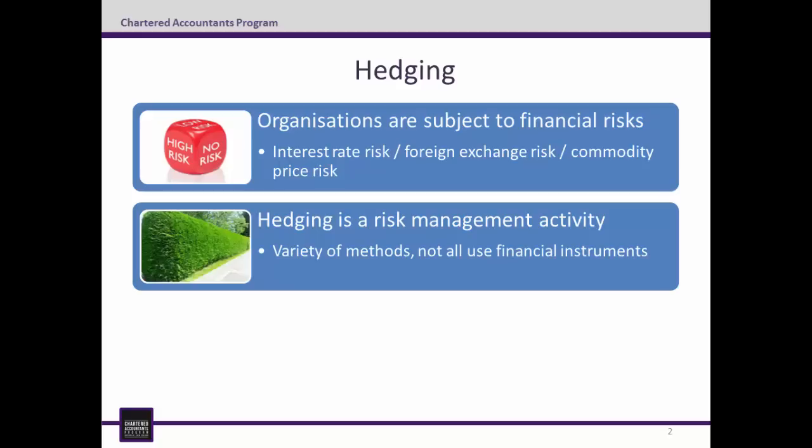To manage this, there are a number of things the company could do. It could simply pay for the inventory now, or it could exchange Aussie dollars for euros and then hold them until payment is required. More likely, however, is that it would use a derivative of some sort, like a forward rate agreement or an option, to mitigate the foreign exchange risk.